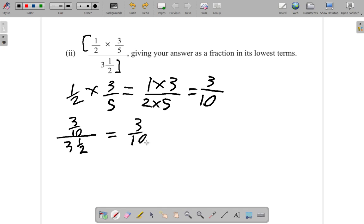You have three-tenths all over, two times three is six, six plus one is seven. So you have seven over two. You can rewrite this as three-tenths divided by seven over two.